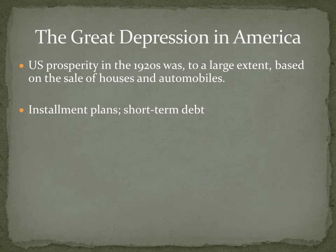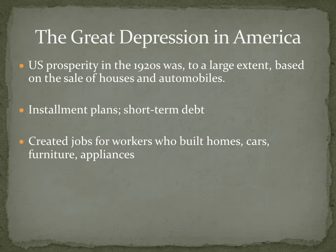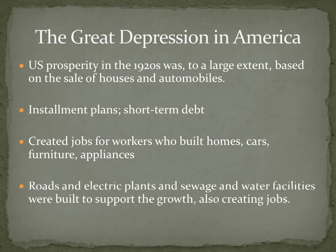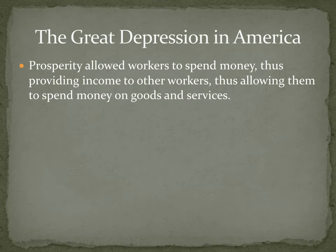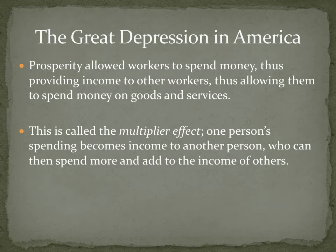You don't buy houses and automobiles outright with cash — you buy them with loans and installment plans. So there was an increase in the amount of debt that people and businesses were carrying. This created jobs for workers who built homes, cars, furniture, and appliances, and also created roads, electric plants, and sewage and water facilities to support infrastructure and growth. All this prosperity allowed workers to spend money, providing income to other workers — the multiplier effect: one person's spending becomes income to another person, who can then spend more and add to the income of others.